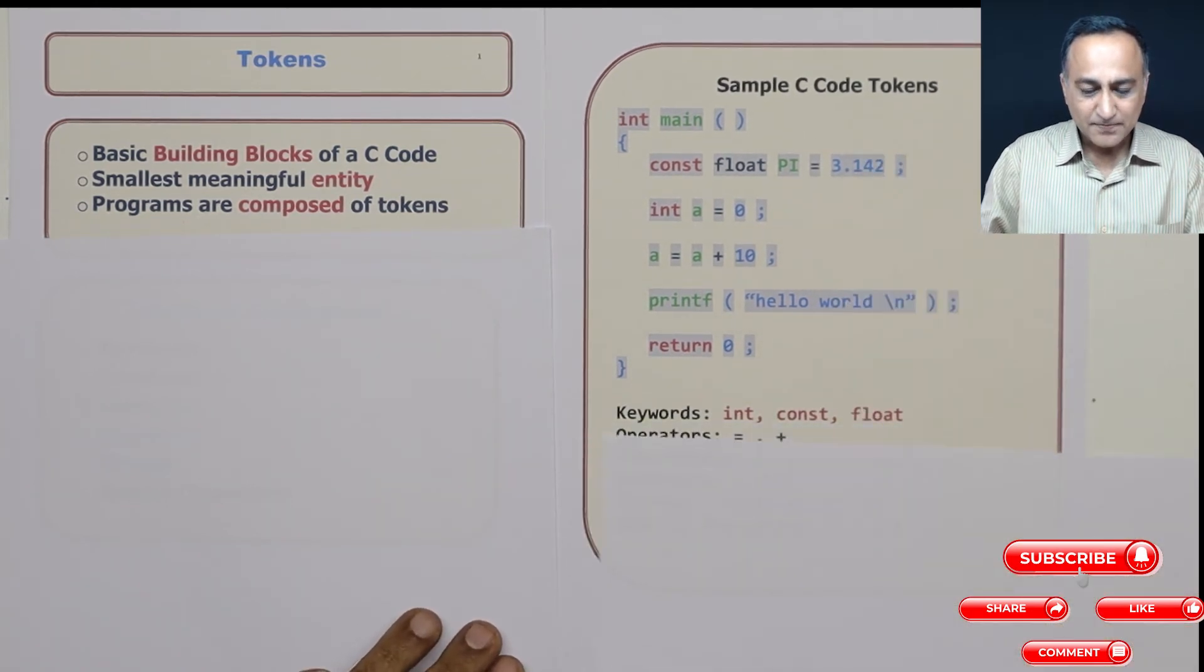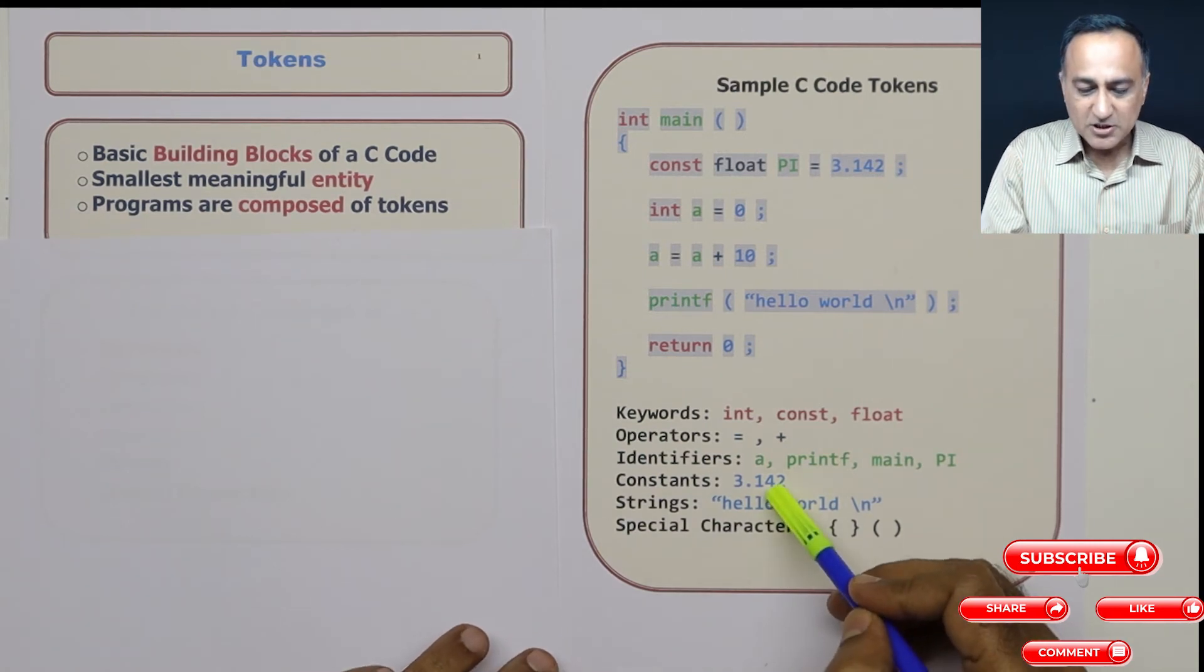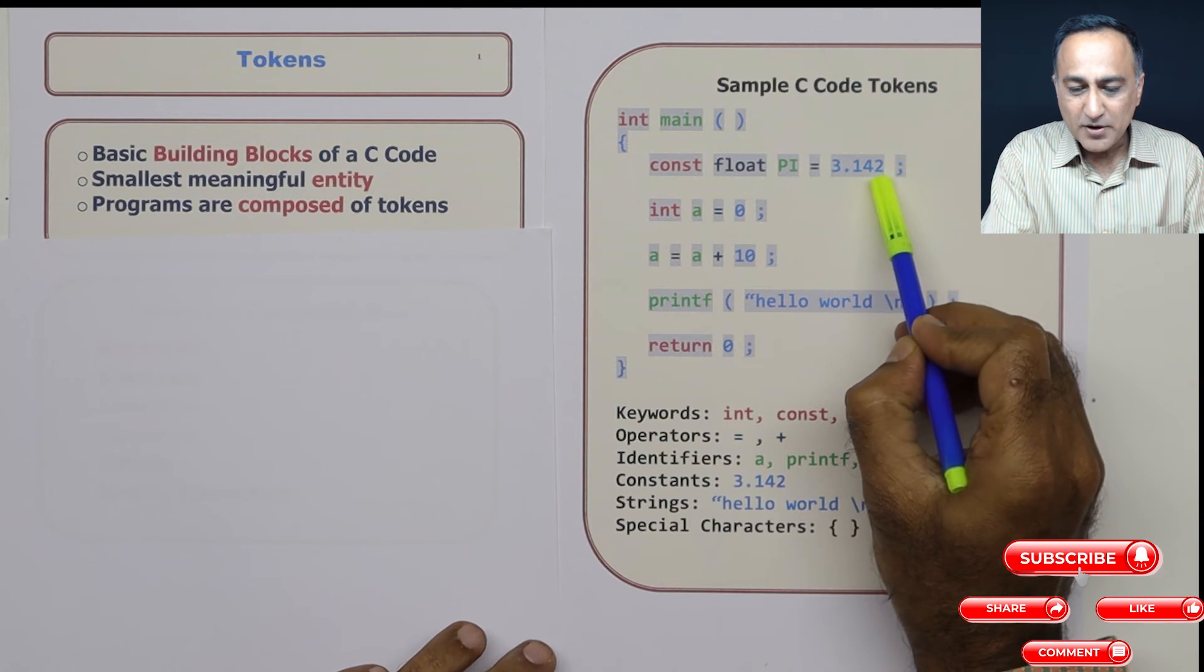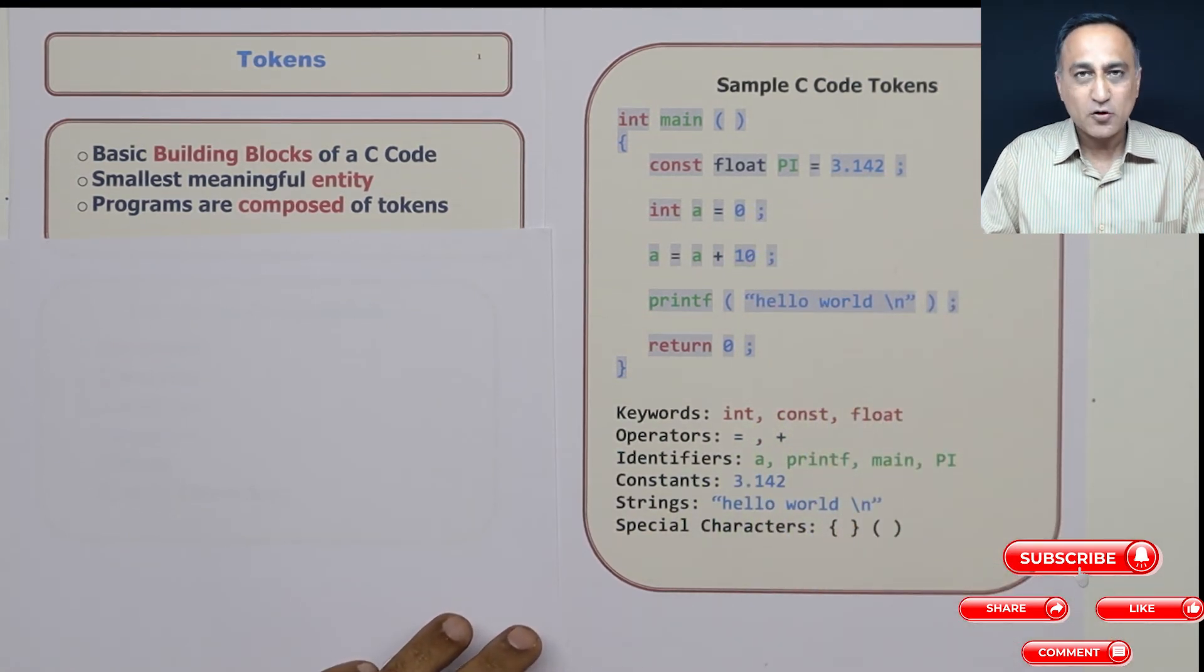The last kind of token happens to be a constant. If you look here, 3.142, 0, 10, these are all examples of constants.